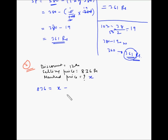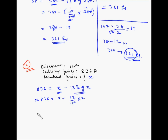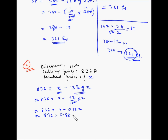So X minus the discount on the marked price equals the selling price. That means 836 equals X minus 12% of X, which is X minus 12 divided by 100 multiplied by X. Since there are two zeros in the denominator we move the decimal two places, giving 0.12 times X. So 836 equals X minus 0.12X, which is 0.88 times X.